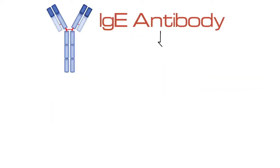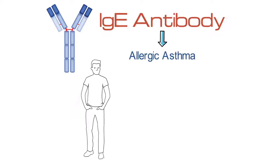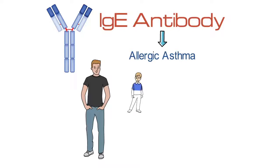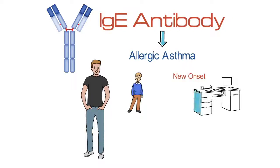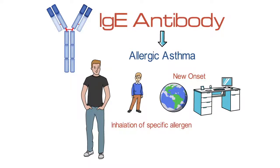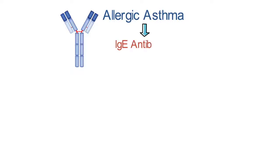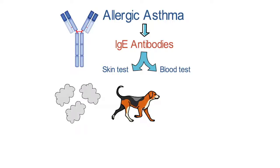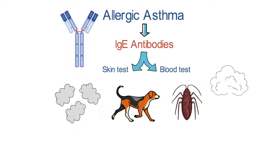IgE is the allergic antibody, which is very specific for allergic asthma. Patients who have allergic asthma may have asthma that's been persistently allergic since childhood, or new-onset allergic asthma, particularly as related to occupational exposures or other environmental exposures. For these patients, inhalation of a specific allergen will cause their typical asthma symptoms to develop. Allergic asthma is mediated by specific IgE antibodies, and so often we can find specific IgEs, either through skin testing or blood testing, for things like dust mites, pet dander, cockroaches, and pollens like trees and grasses.